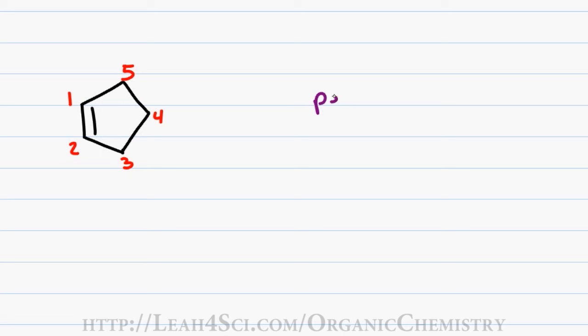Having five carbons in my parent chain gives me a first name of pent. Because it's a ring, I have to precede that with the word cyclo. A double bond between carbon one and two would give me one-ene. However, since this is the only substituent on the molecule, the one will be understood and doesn't have to be written out. This gives me a final name of cyclopentene.